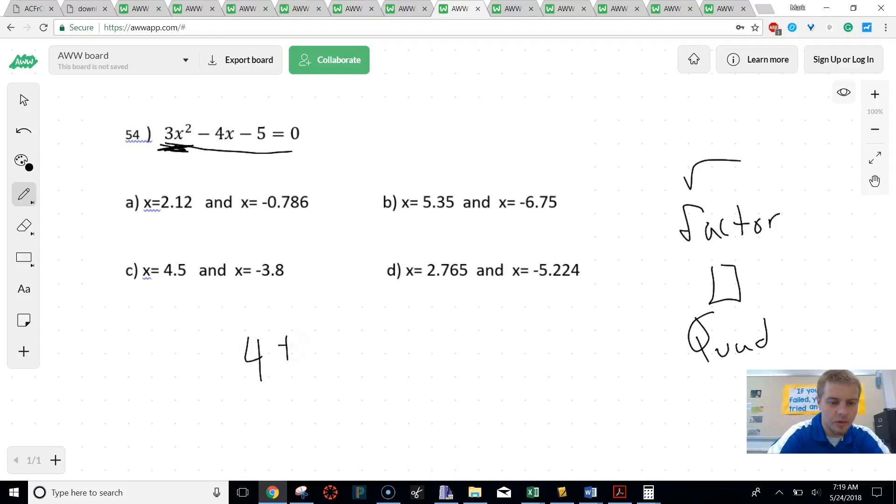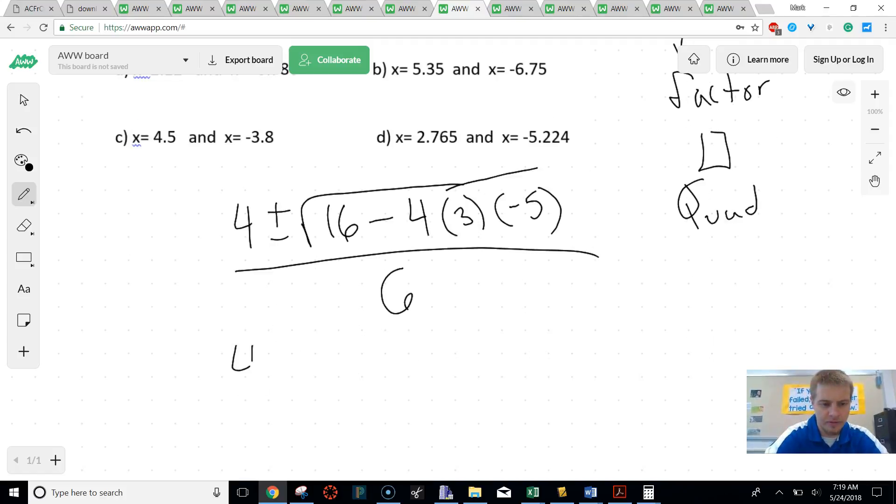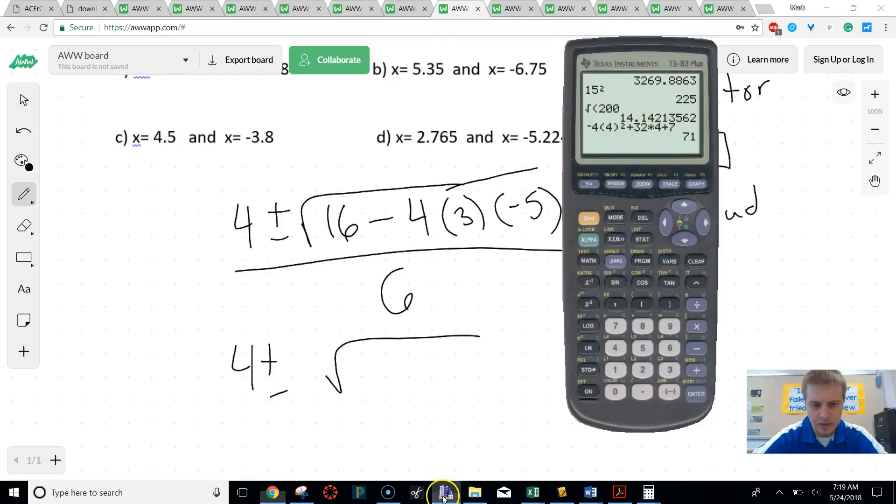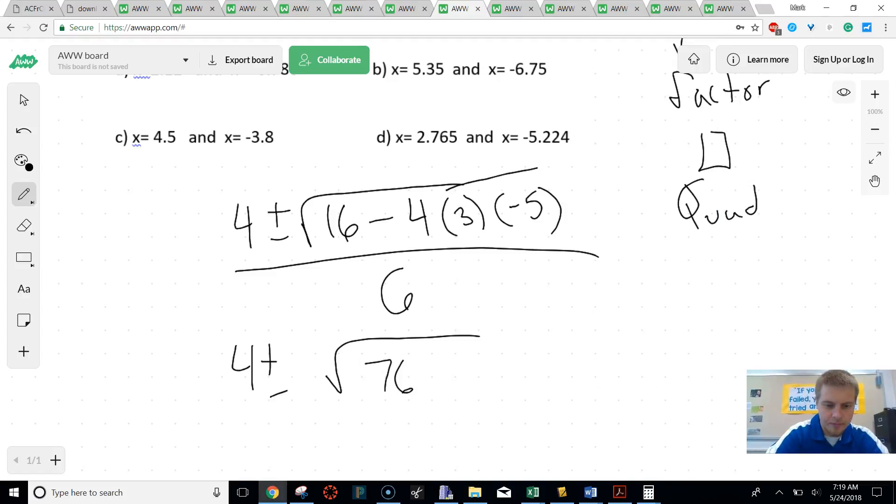So we're going to do negative b, which would be 4, plus or minus the square root of b squared, which is 16, minus 4 times a, which is 3, times c, which is negative 5, all over 2a, which 2 times a would be 6. And now, once we have that, we're going to keep working it out a little bit. So I'm going to have 4 plus or minus the square root of, and we're just going to put that whole thing in our calculator so we don't mess it up. That's 76 over 6.